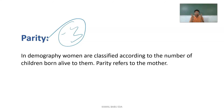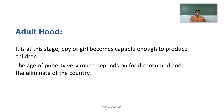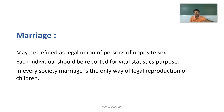In demography, parity calculates how many live births occurred for the mother and how many children are alive. Adulthood is the stage where a boy or girl is capable of producing children — it is the age of puberty, which depends on food consumed and the climate of the country. When they are capable of producing offspring, they are considered adults.